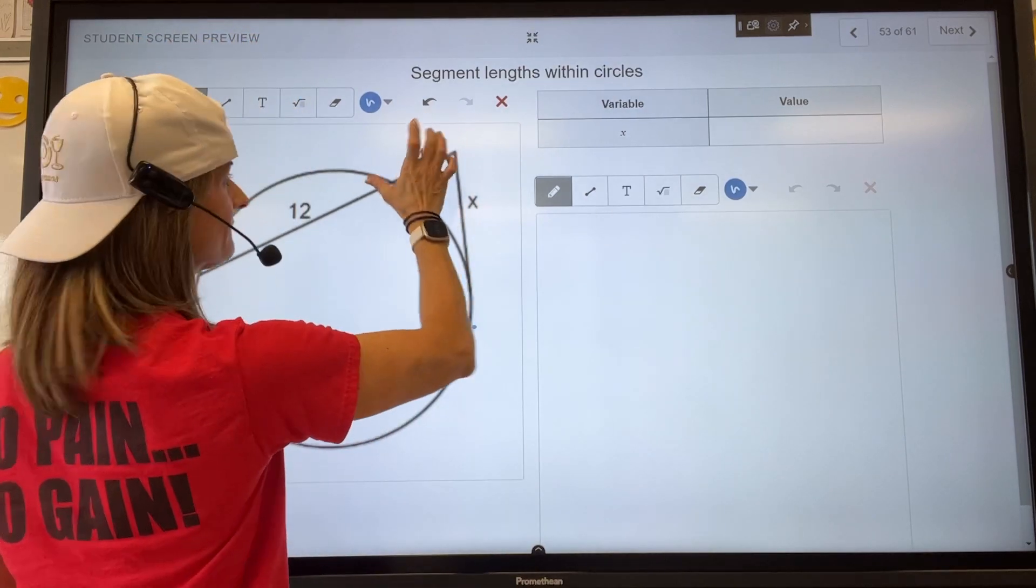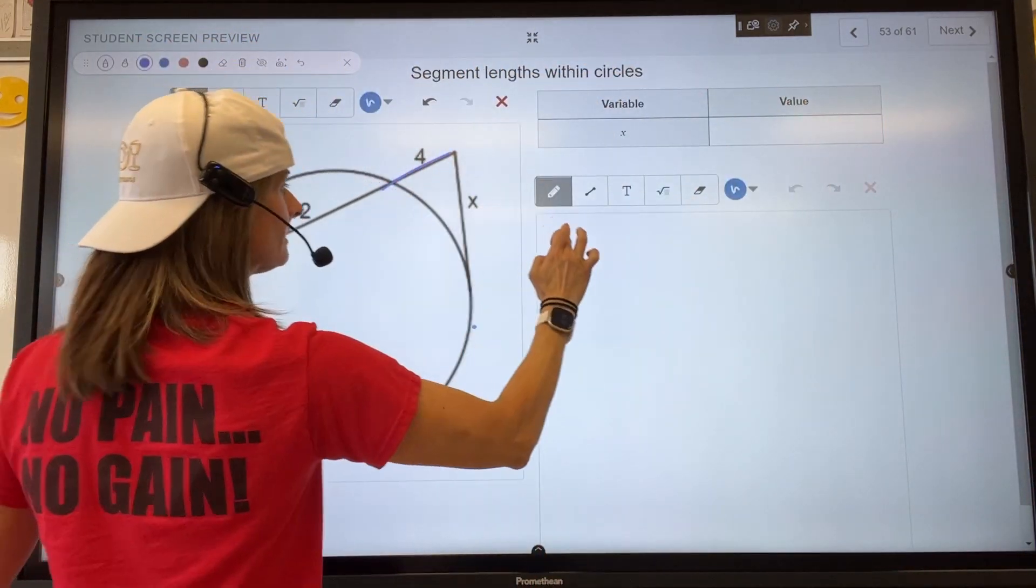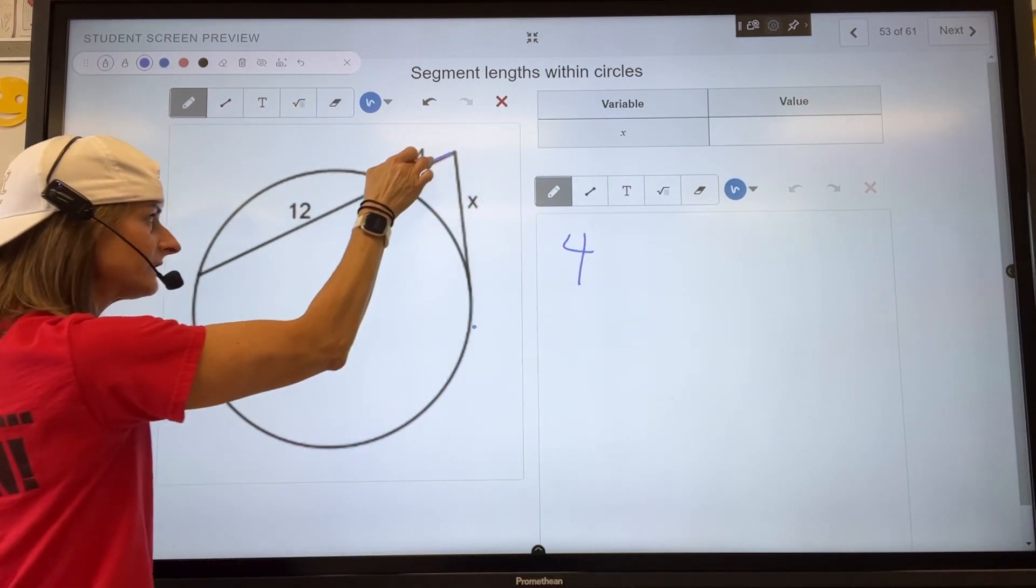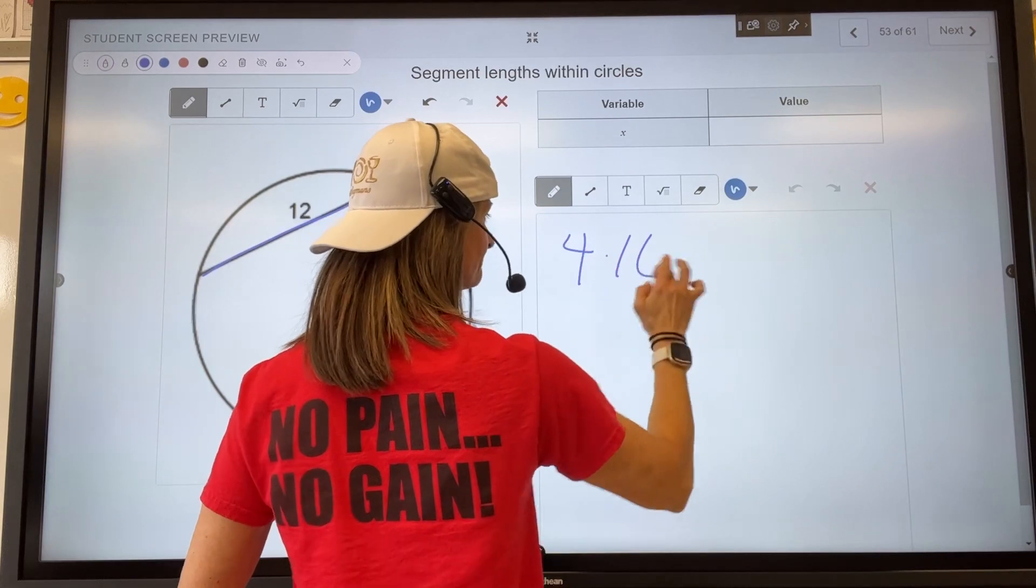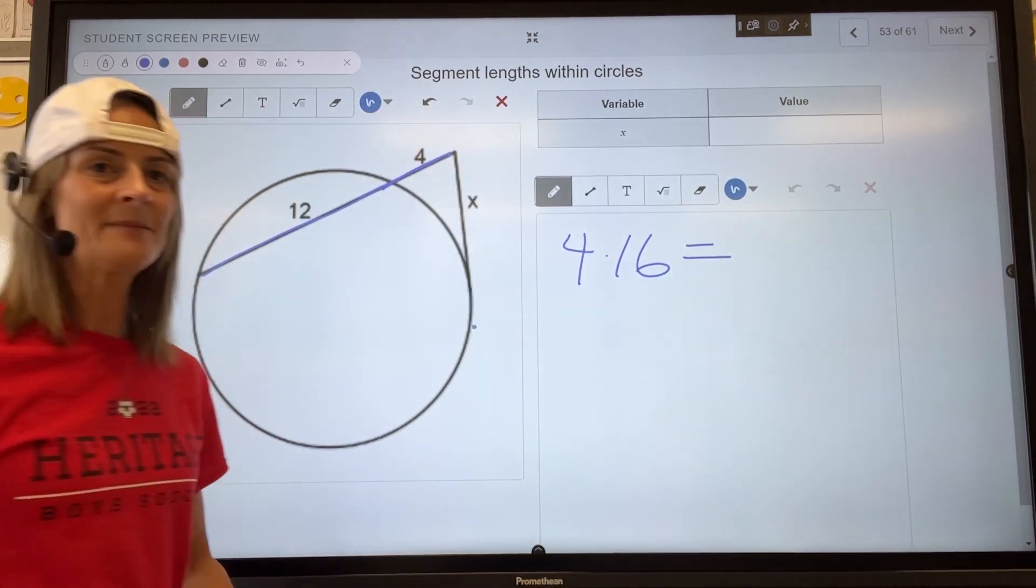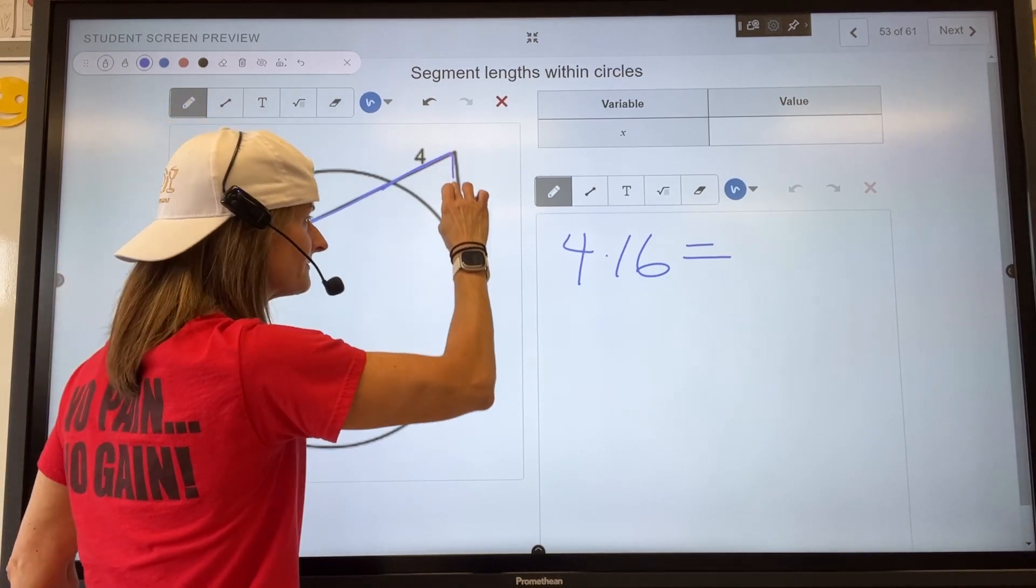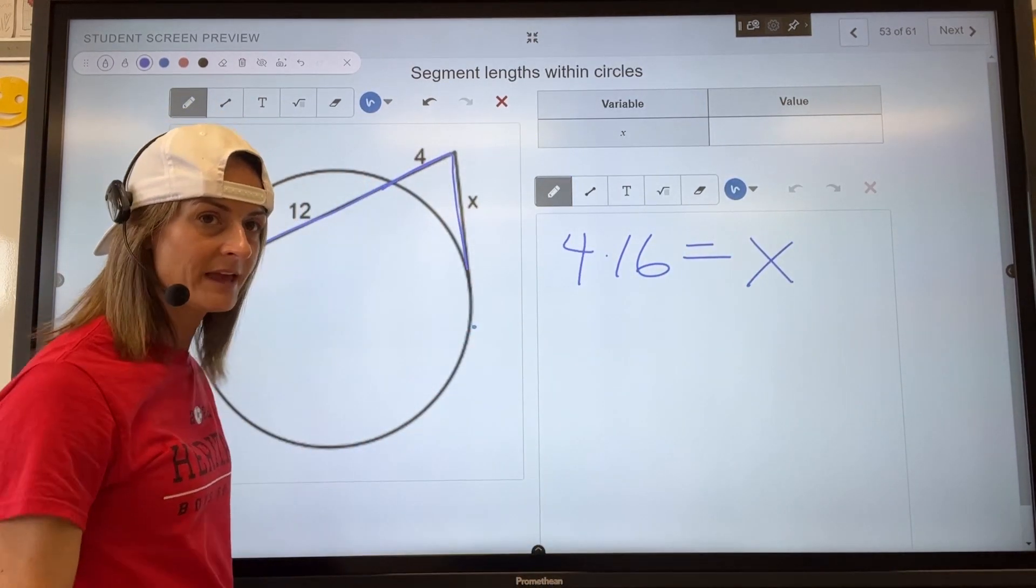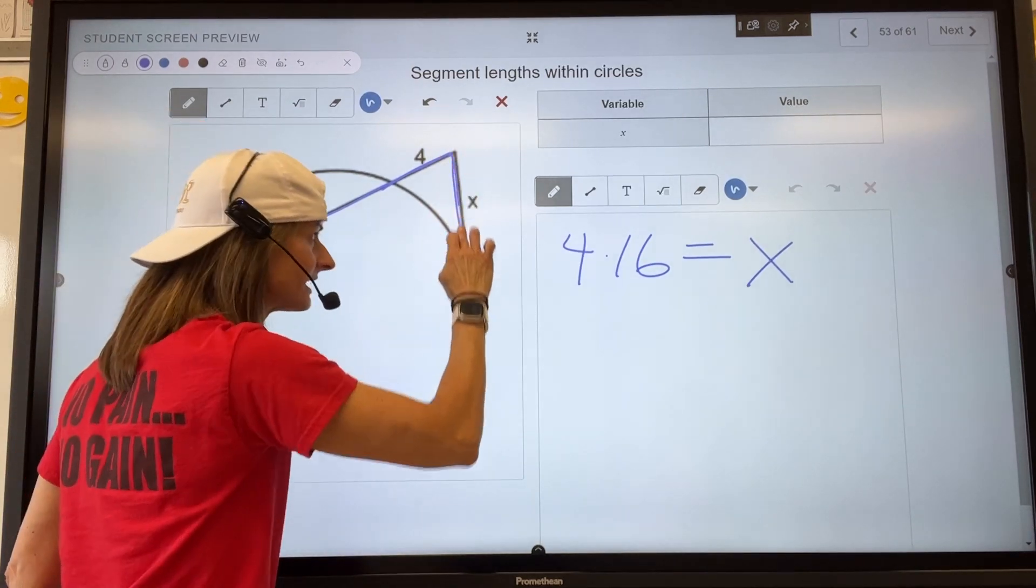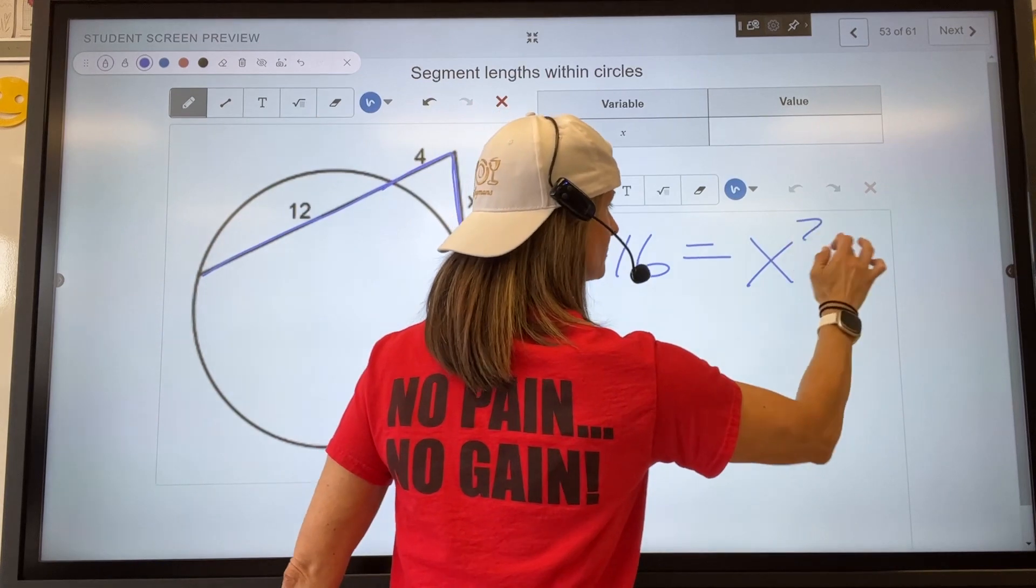It's the exterior part of the secant line times the entire length, which is 4 plus 12, so that's 16, equals same thing on the other side, except the exterior part of this segment is the same length as the entire segment, so it's just x times x, x squared.